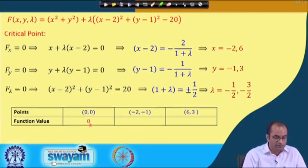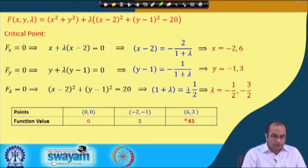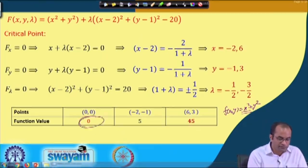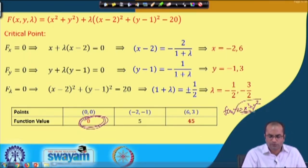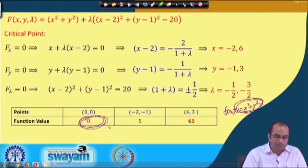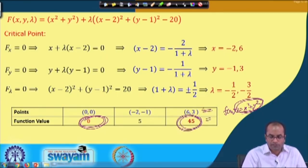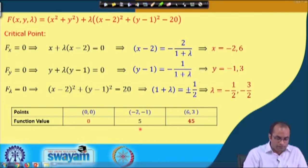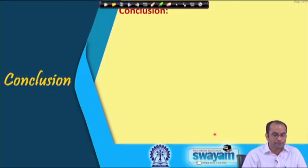Evaluating f(x, y) = x² + y² at the three candidate points: f(0, 0) = 0; f(-2, -1) = 4 + 1 = 5; f(6, 3) = 36 + 9 = 45. The minimum value is 0 at (0, 0) and the maximum value is 45 at (6, 3).